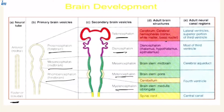In these secondary vesicles, ventricle formation also begins: lateral ventricles form in the telencephalon, the third ventricle in the diencephalon, the cerebral aqueduct in the mesencephalon, and in the rhombencephalon we get the fourth ventricle and the central canal. For more on the CSF and CSF pathway and production, see the other video on the Inspiring Minds YouTube page.